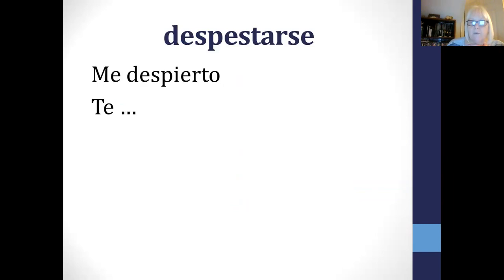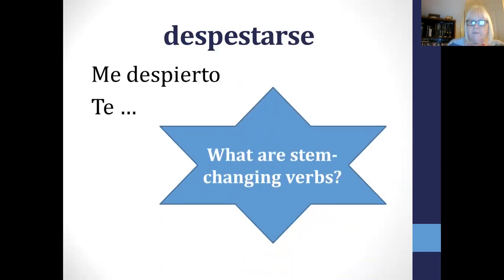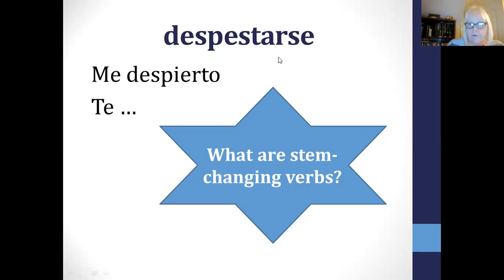The next one would be te despiertas. Now these are stem-changing verbs where the change takes place in the stem of the verb — specifically in the final vowel. It's the second E which is going to change: des- and then the E changes to IE — despierto.